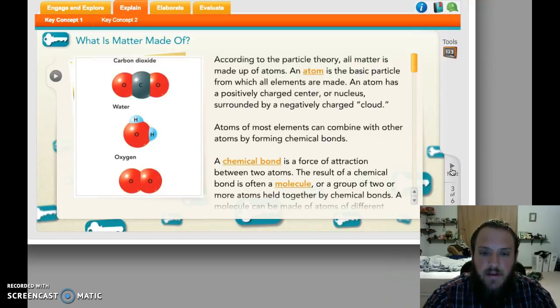According to particle theory, all matter is made up of atoms. Everything that exists is made of atoms. The basic particle of which all things are made is an atom. It has a positively charged nucleus, which is where our neutrons and protons are, surrounded by our electrons. Sometimes they're in that version we saw where it looks like a solar system. Sometimes it's a cloud.